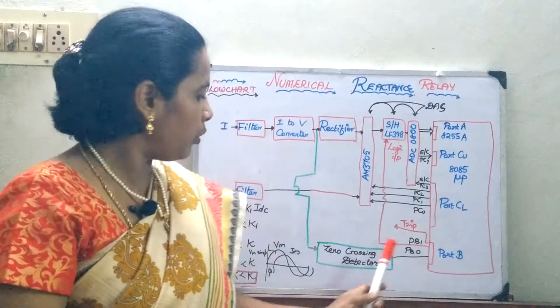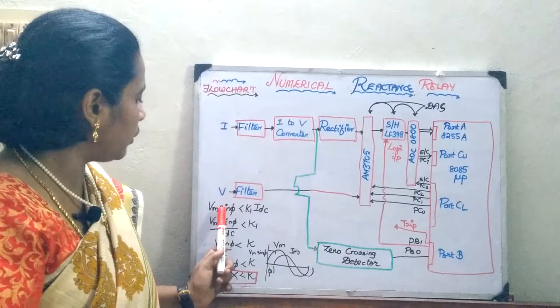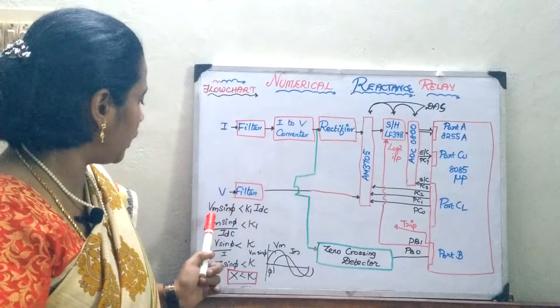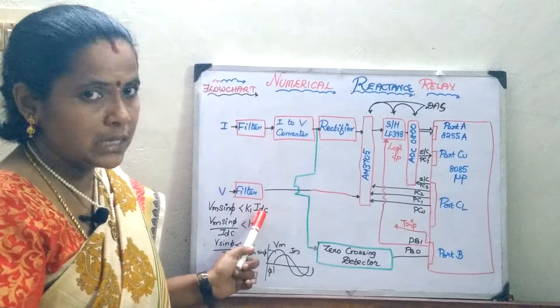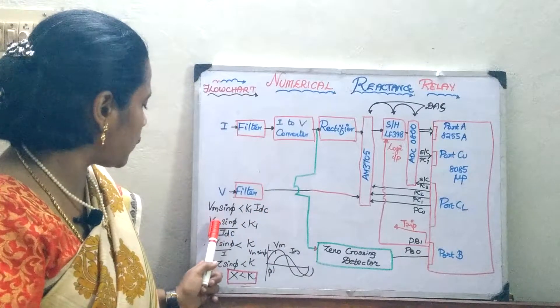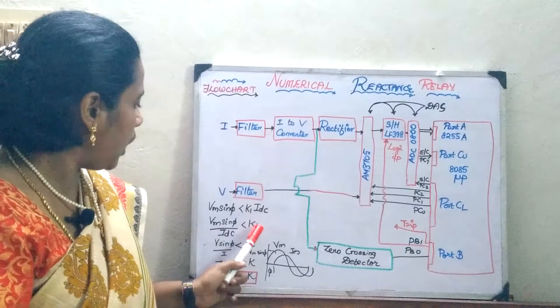Now we will move on to the principle. What is the principle of the reactance relay? You are just going to take the reactance part. So, we are taking your Vm sin phi, you are going to compare it with the IDC. From this, you are getting Vm by IDC into sin phi is less than K1, a constant.